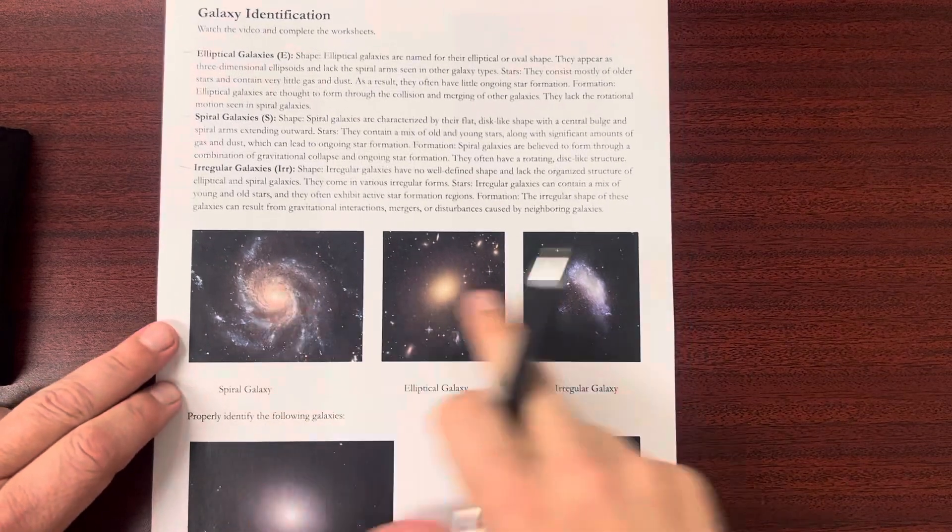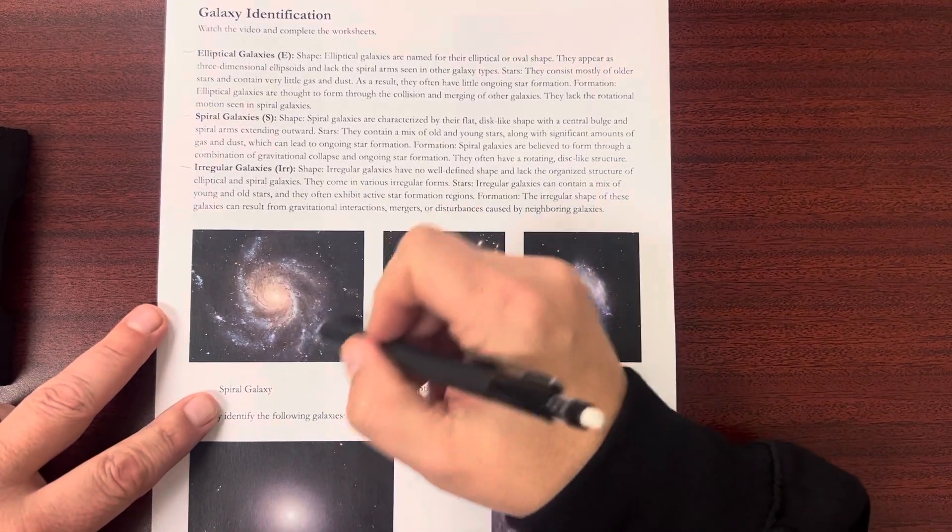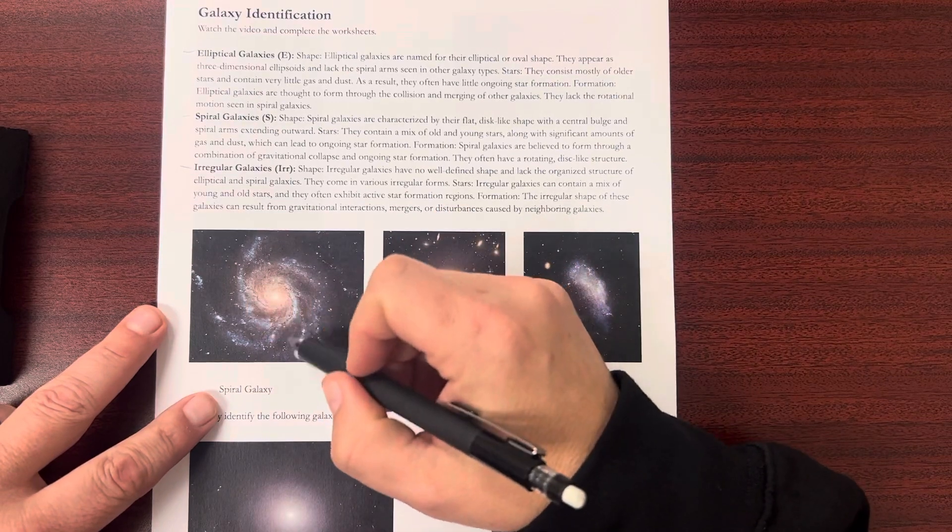And we've got some generic pictures of each of these, where the spiral galaxies take on this very obvious spiral formation, like a pinwheel.